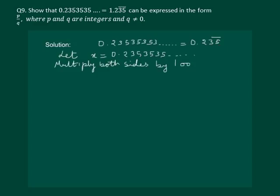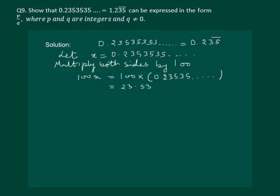This will give us: 100x is equal to 100 into the given number. Multiplication with 100 will move our decimal point two places to the right and we will get 23.53535 and so on.